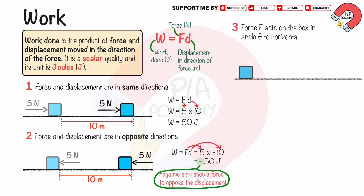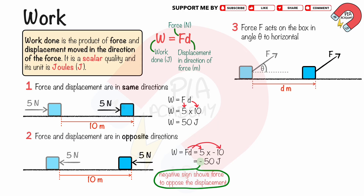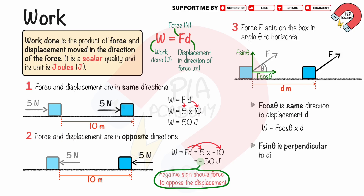When the force F acts on a box at an angle theta to the horizontal, causing the box to move D meters to the right, as shown, the force F can be resolved into horizontal and vertical components. The horizontal component is F cos theta, and the vertical component is F sine theta. F cos theta is in the same direction as the displacement D, so this component does work W equals F cos theta times D. F sine theta is perpendicular to the displacement D, so this component does not do work on the box.